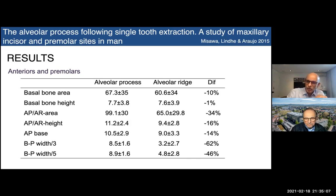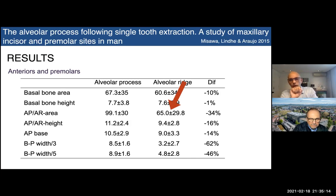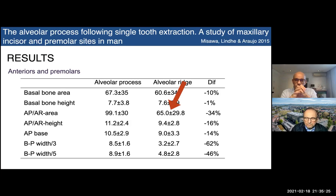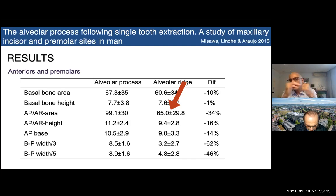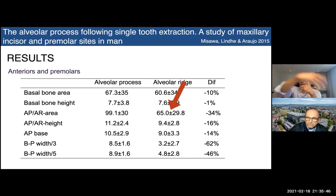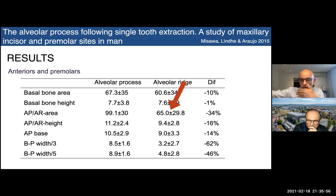Pay attention to this red arrow pointing at the cross-sectional area following tooth extraction without doing anything — on average 65 square millimeters of bone. You cannot place an implant 10mm long and 4mm wide in 65 square millimeters — there will be a need for bone augmentation. The green arrow points at the average dimension of the alveolar process before extraction: about 100 square millimeters — more than enough to place an implant. This shows two things: if you do nothing, you very likely need bone augmentation; but if you preserve even 80–85% of the dimension, you can still place an implant.